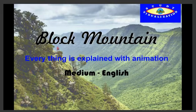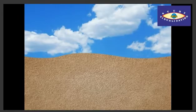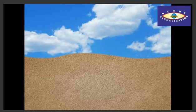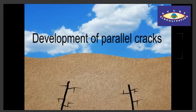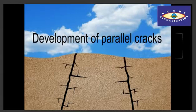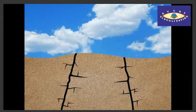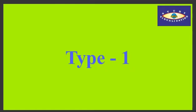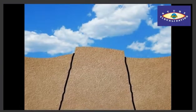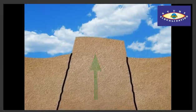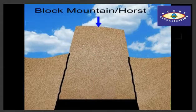According to this theory, due to external and internal forces of the earth, contraction and expansion of the earth surface occurred. When the limit of the expansion and contraction exceeds the tolerance level of the rocks, then parallel faults are developed along the rocks. Many incidents can happen through these parallel faults — the middle block can move upward, and this will be known as a horst or block mountain.